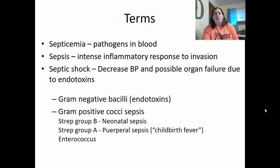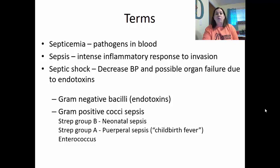Recall that endotoxins are normally produced by gram-negative bacilli bacteria. Gram-positive cocci can also cause sepsis — for example, strep group B causes neonatal sepsis, which is why pregnant women get tested for strep B before giving birth. We also see strep group A causing puerperal sepsis, which is childbirth fever, and enterococcus, which is a common healthcare-acquired infection.